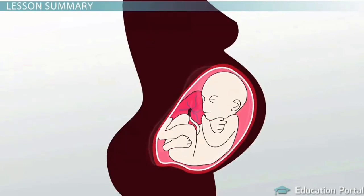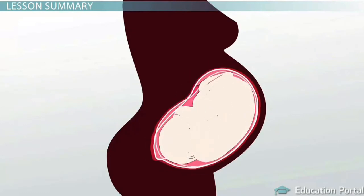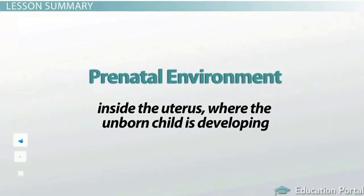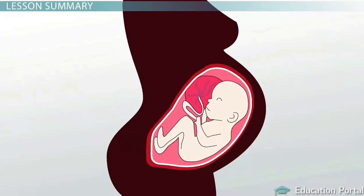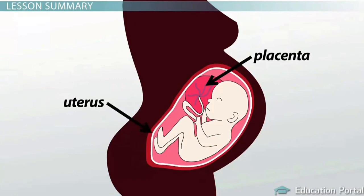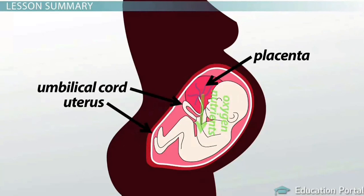Like all mammals, human babies develop inside their mother. The environment inside the uterus where the unborn child is developing is called the prenatal environment. The mother and fetus are connected by a temporary organ called the placenta, which attaches to the mother's uterus and to the unborn child through the umbilical cord. It transfers oxygen and nutrients from the mother to the fetus while allowing the fetus to eliminate waste.